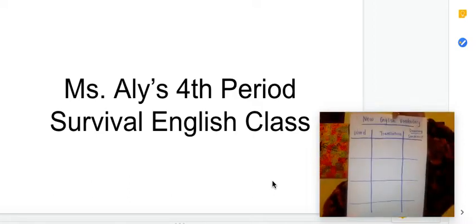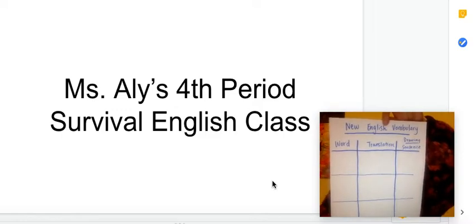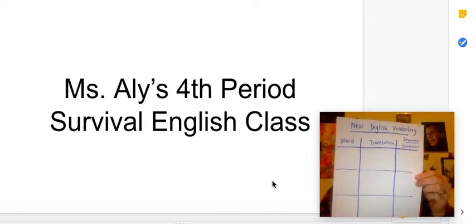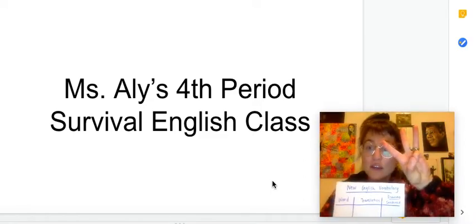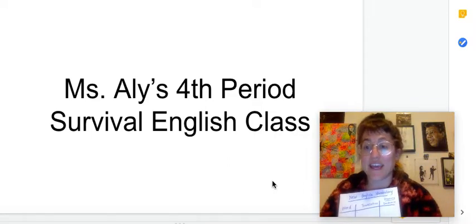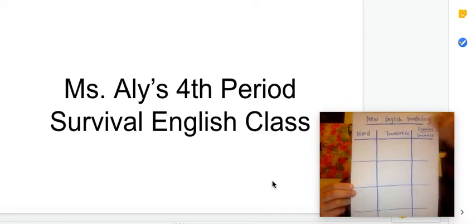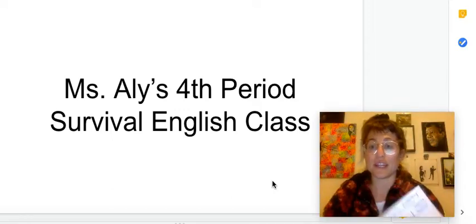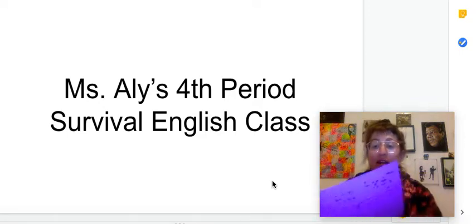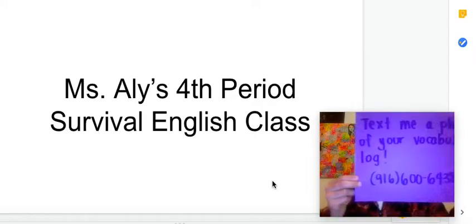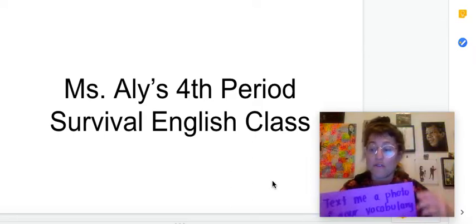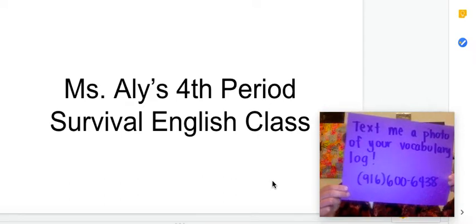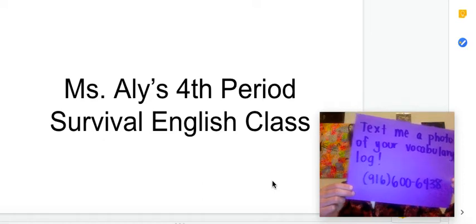On a piece of paper — it can be in a notebook or a piece of paper — you are going to write new English vocabulary: the word you learn, the translation, and a drawing or sentence. You should have three or four new words every day. Each day I want you to text me a photo of your vocabulary log. You're going to take a picture with your phone and text me the picture. My number is 916-600-6438.